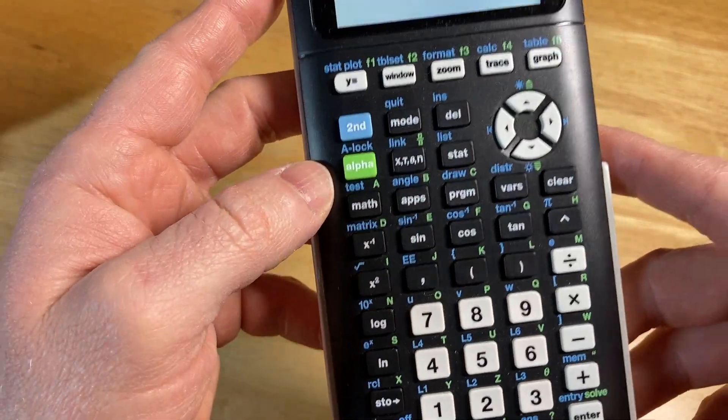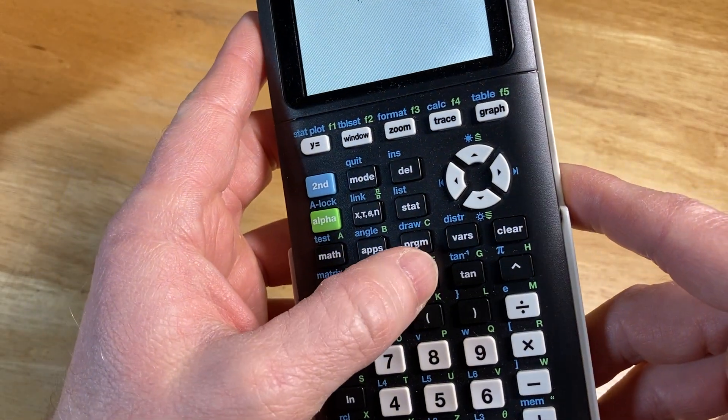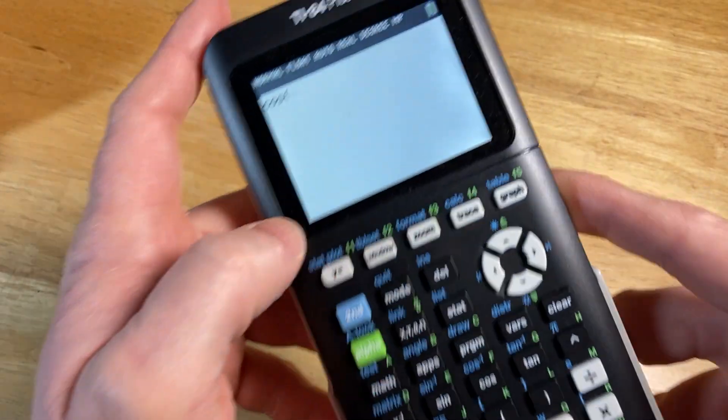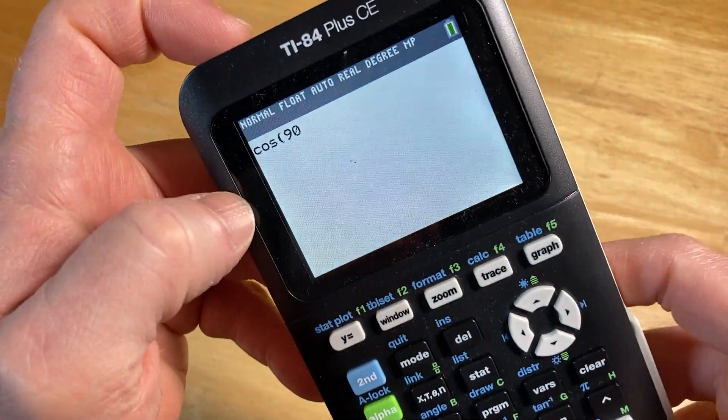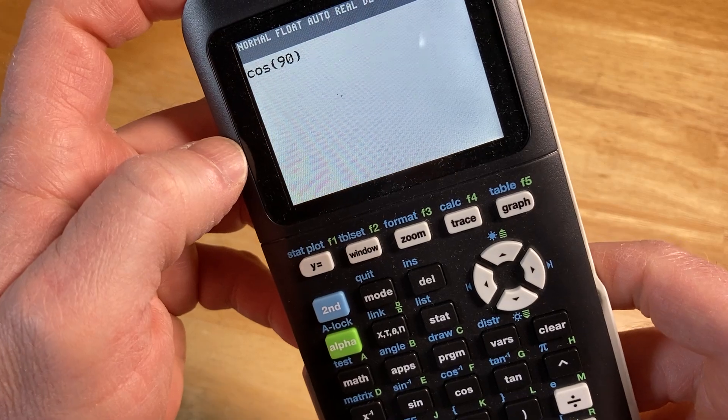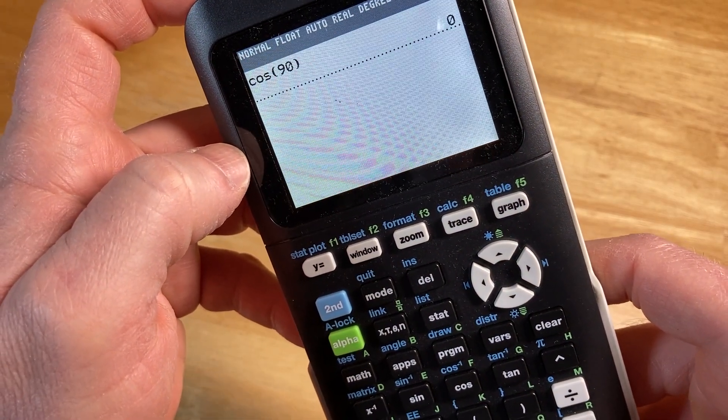Now we're in degree mode, so let's do a computation. Let's do the cosine of 90 degrees. So cosine, there's cosine, and then 90, and then parentheses, and then enter, and it gives you zero. The cosine of 90 degrees is zero.